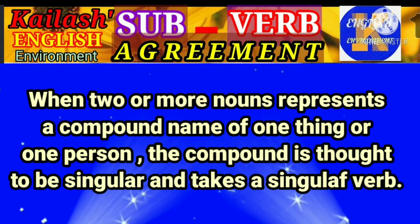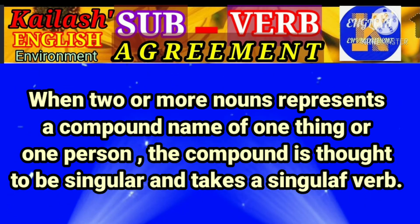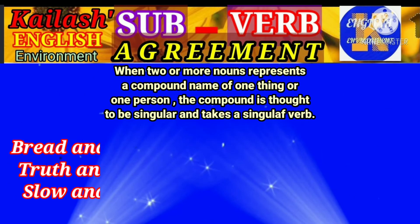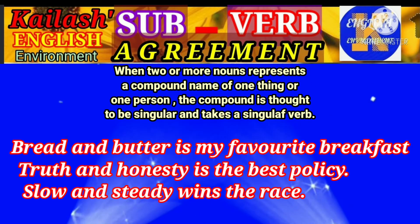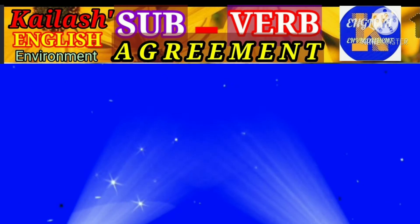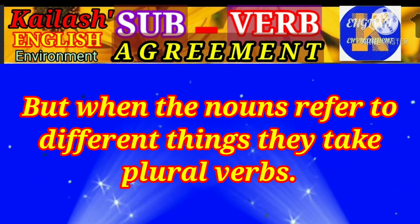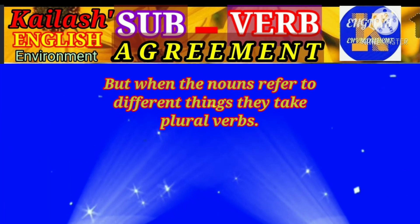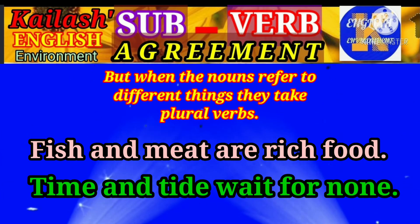When two or more nouns represent a compound name of one thing or one person, the compound is thought to be singular and takes a singular verb. For example, 'Bread and butter is my favorite breakfast.' 'Truth and honesty is the best policy.' 'Slow and steady wins the race.' But when they refer to different things or persons, the verb becomes plural. For example, 'Fish and meat are rich food.' 'Time and tide wait for none.'